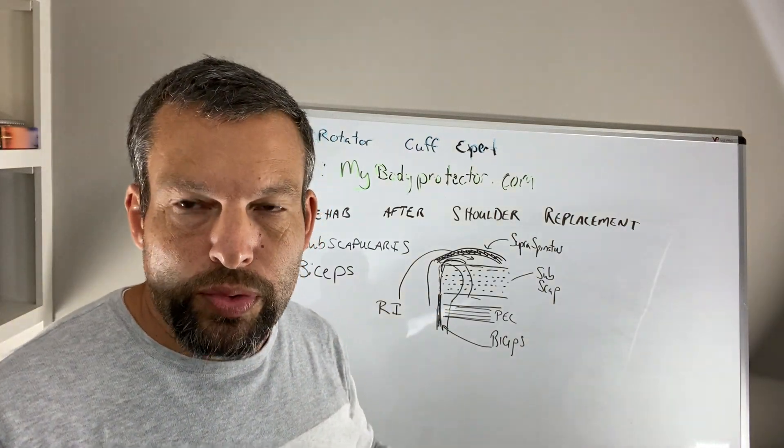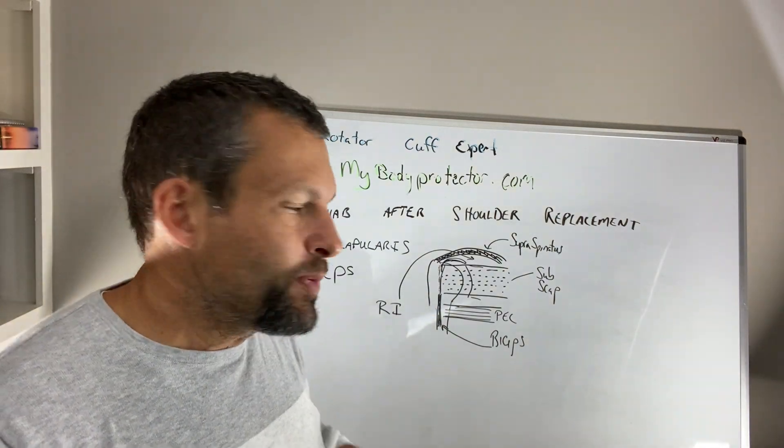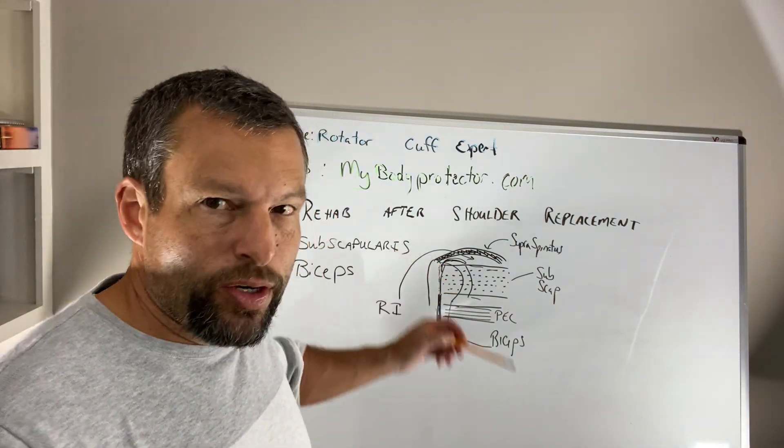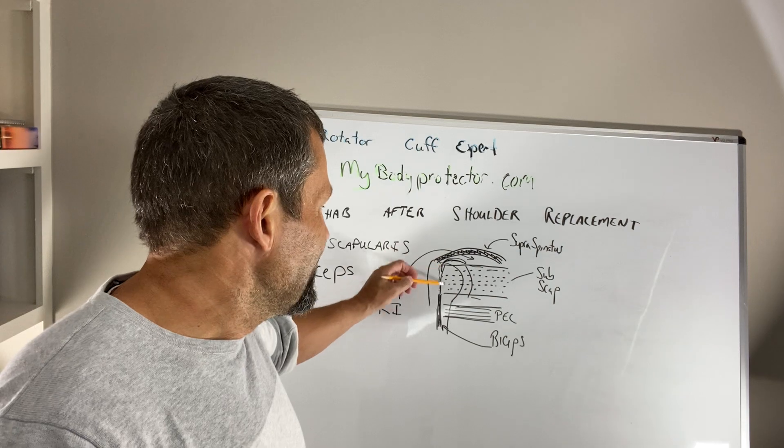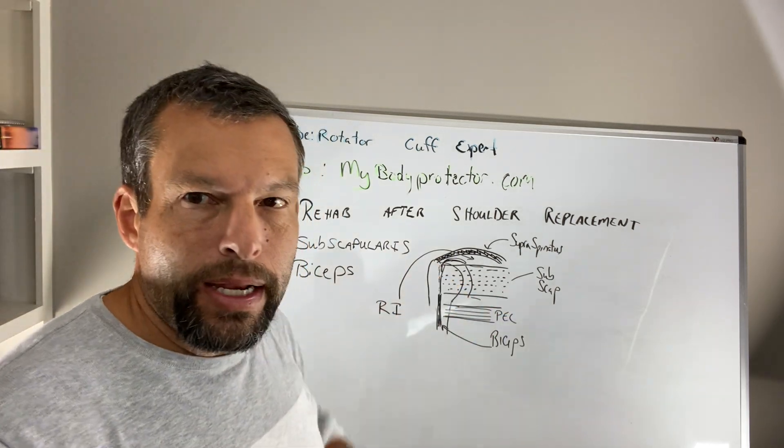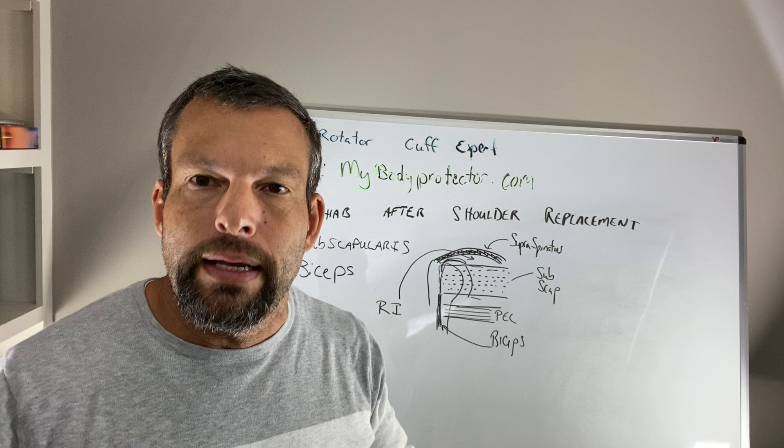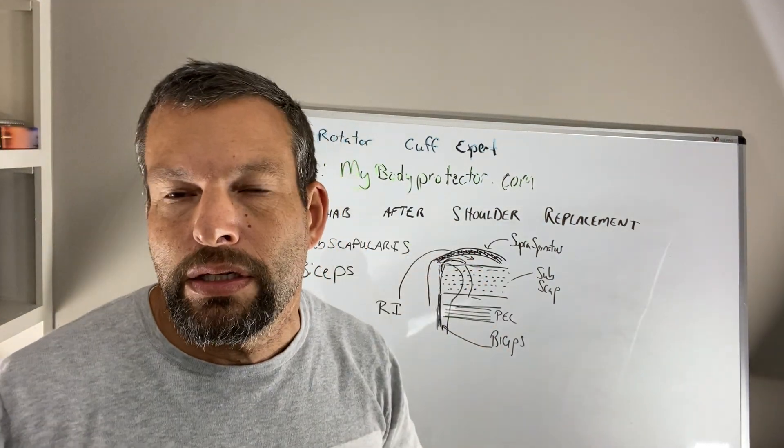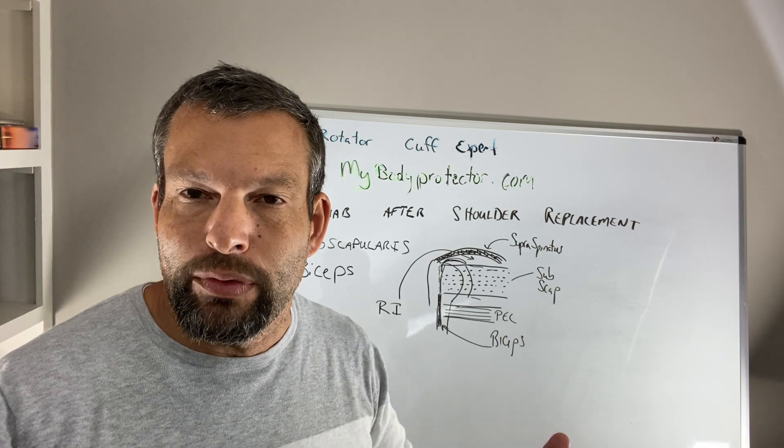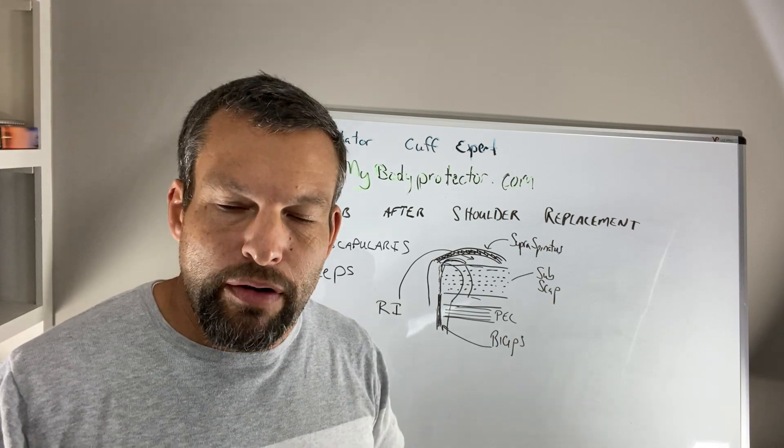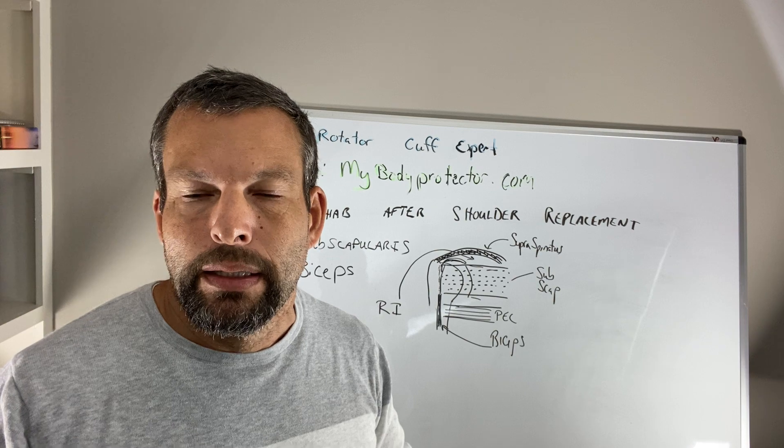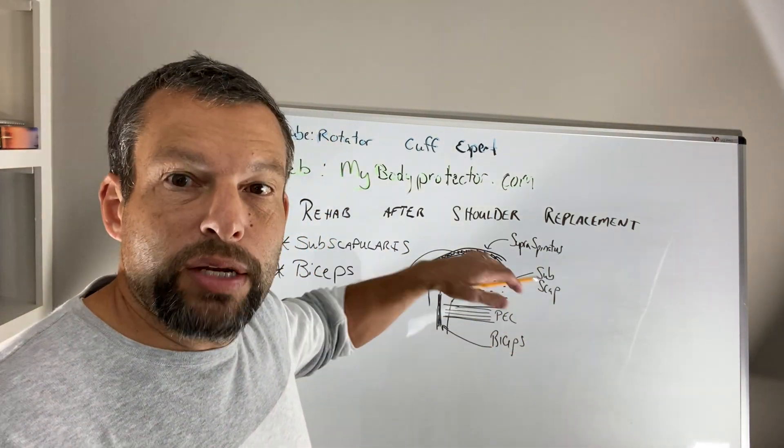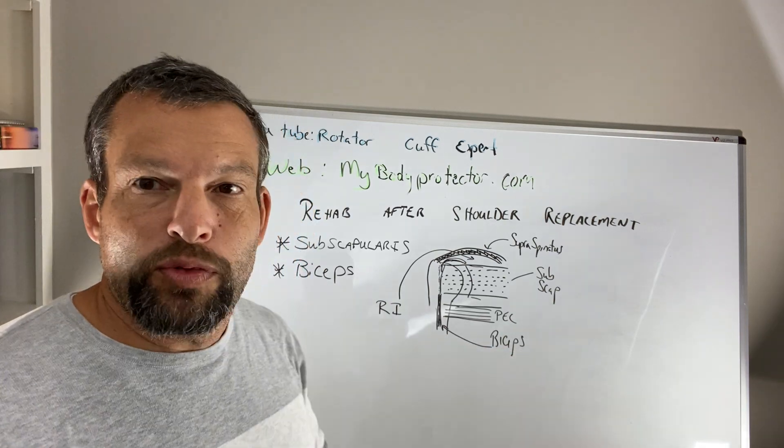So when we do shoulder surgery, specifically the replacement, we actually release this subscapularis, which is one of the rotator cuff muscles, release this off so we can get to it. Now, again, this is typically, occasionally you are able to actually cheat above and below the subscapularis so you don't have to release it. That's unusual, but there are a few people who do that in practice. But typically, we're going to take this subscapular off, we're going to do our surgery, then we're going to repair it.